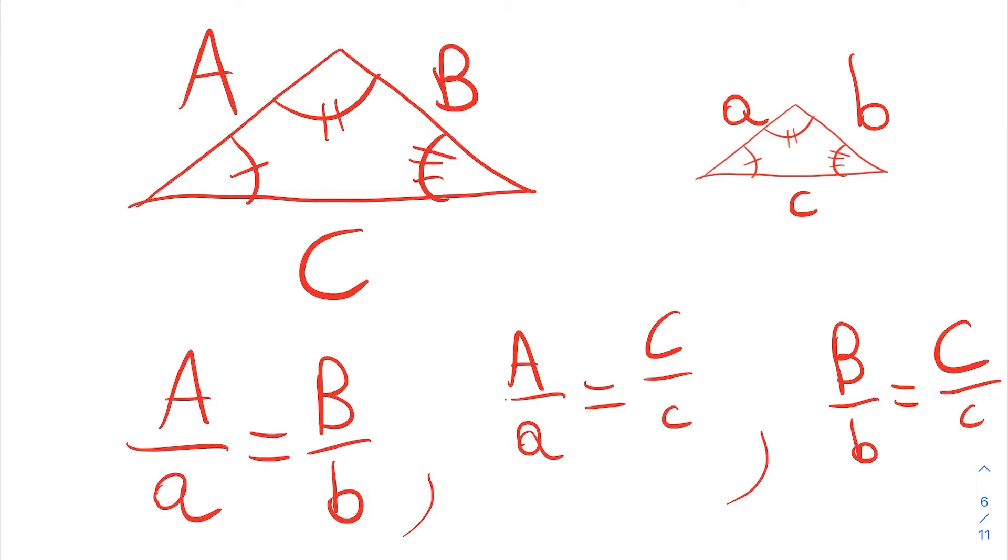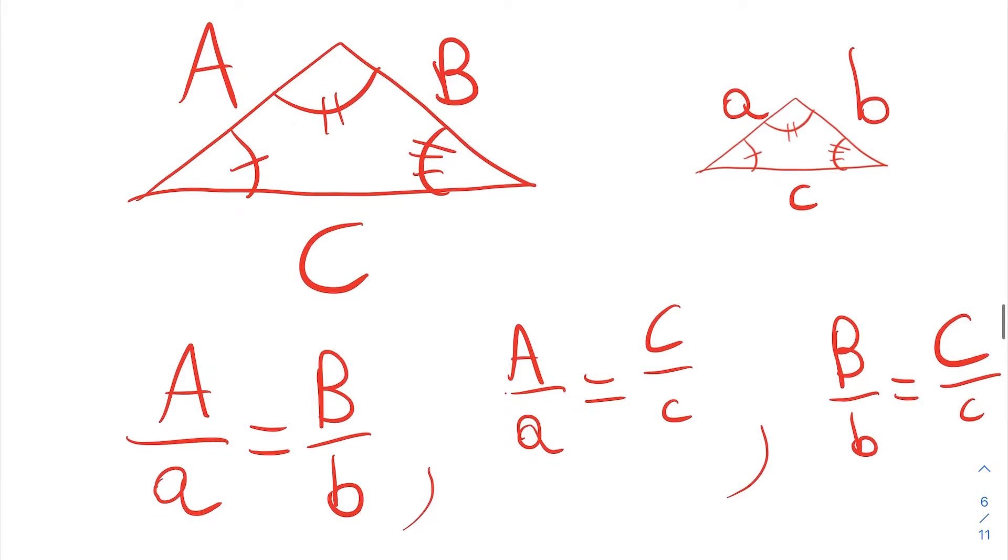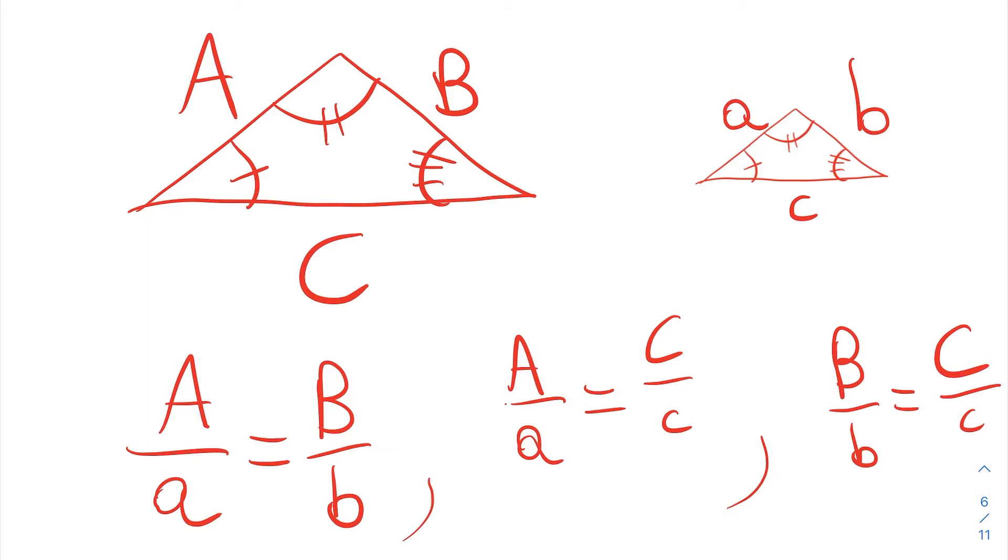What that statement just read is that corresponding sides, like for instance, capital A corresponds to lowercase a. They're both corresponding sides on the triangle, and that ratio is proportional to the other corresponding sides, uppercase B to lowercase b. Corresponding sides are proportional to each other. The ratio of these corresponding sides, A to a and B to b, those two ratios are proportional. But also, A to a, that ratio is proportional to C to c.